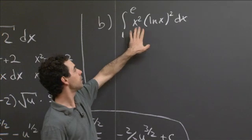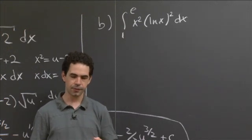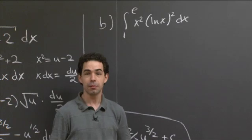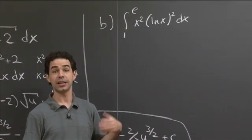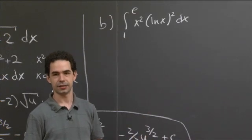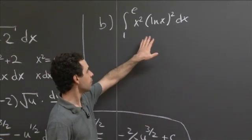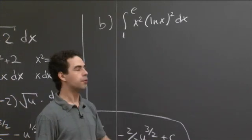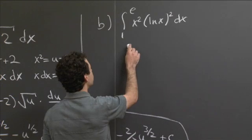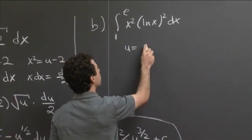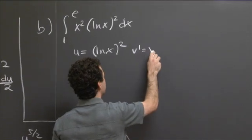Seeing this product, I'm going to go for integration by parts directly. I have a polynomial times a function of the logarithm. The thing to remember is that polynomials like to be differentiated — that's their preference — but logarithms really, really like to be differentiated. You'd much rather differentiate a logarithm than integrate it; differentiating logarithms makes them into just powers of x. So we're going to take u equals ln x squared as the piece we differentiate, and v prime to be x squared.